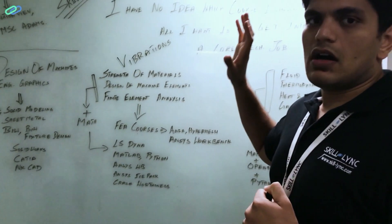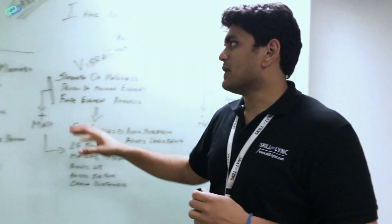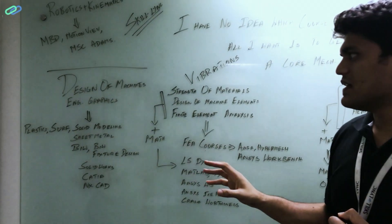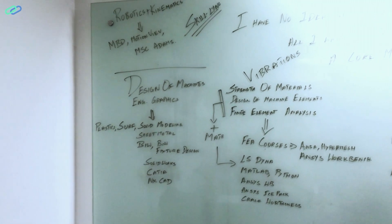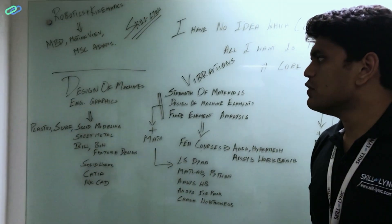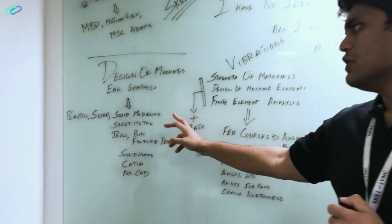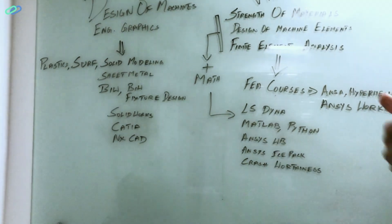So, okay, these three subjects you don't like. So let's come to the next part: design. So if you are interested in design of machine elements or engineering graphics, say if you are interested in something like that, then what you should do is you should basically take advanced sheet metal design, you should learn plastics modeling, surface modeling, solid modeling, sheet metal modeling, body and weight design, body and weight fixture design.